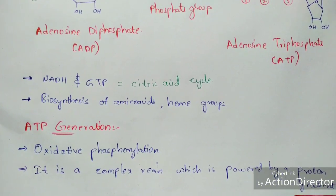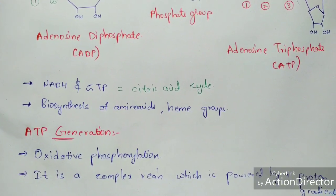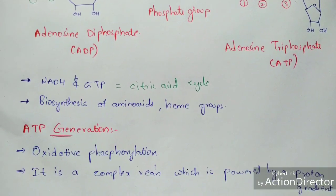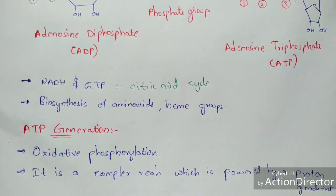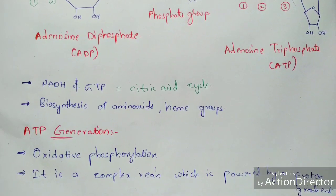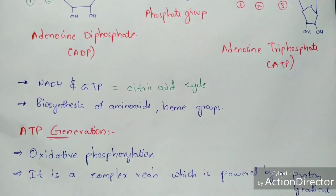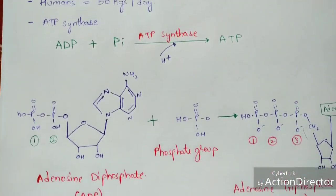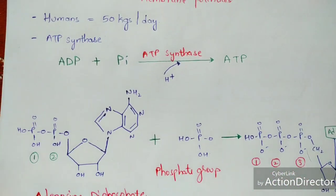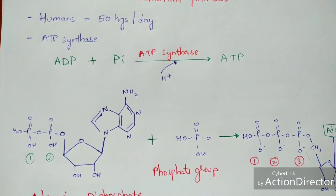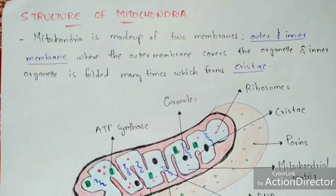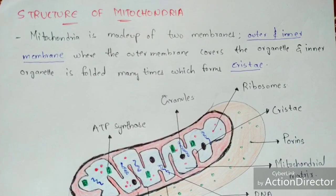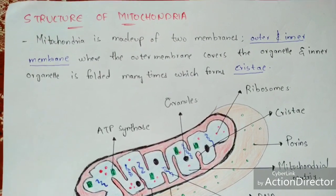I will not explain oxidative phosphorylation in detail in this video as it would make the video very long. Just remember that oxidative phosphorylation uses a proton gradient to mainly help in the formation of ATP — adenosine triphosphate.